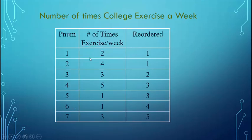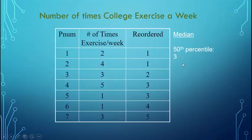Here we have an odd number of scores — the same number of times people exercise per week, reordered from smallest to largest: two people with a score of 1, one person with a 2, two people with a 3, one with a 4, and one with a 5. The middle score is 3, because there are three scores below and three scores above — so 3 is the median. Remember: the median is the middle score in your reordered set, not just the middle number in your random set of data. The first step is to reorder the data, then find the middle score.